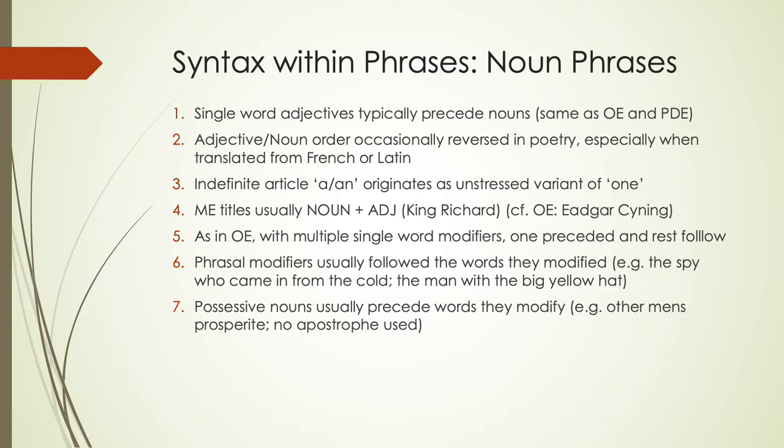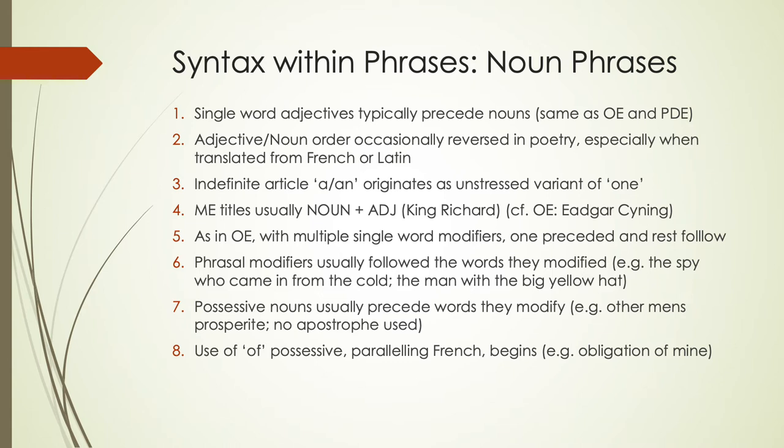Possessive nouns are usually preceding the words they modify, and during this time there were no apostrophes used — so 'other men's prosperity' has the same ordering we'd use today, but now we use apostrophes for possession. We start seeing the use of 'of' as a possessive as well, in parallel to what is happening in French, such as 'obligation of mine' rather than 'my obligation.' We also see some double possessives starting to happen, like 'the boy's dog's bone.'